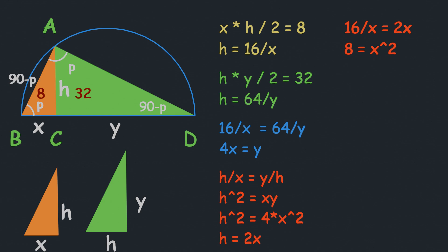Now that we have the value of x, let's find the area of the semicircle. The formula is πr²/2. The radius is (x + y)/2, and since y = 4x, the radius is (x + 4x)/2 = 5x/2.